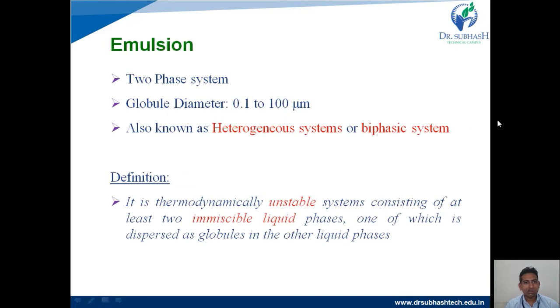Mainly, the emulsion is a two-phase system — one is oil and another one is an aqueous system. That is why it is also known as a biphasic system and also known as a heterogeneous system.